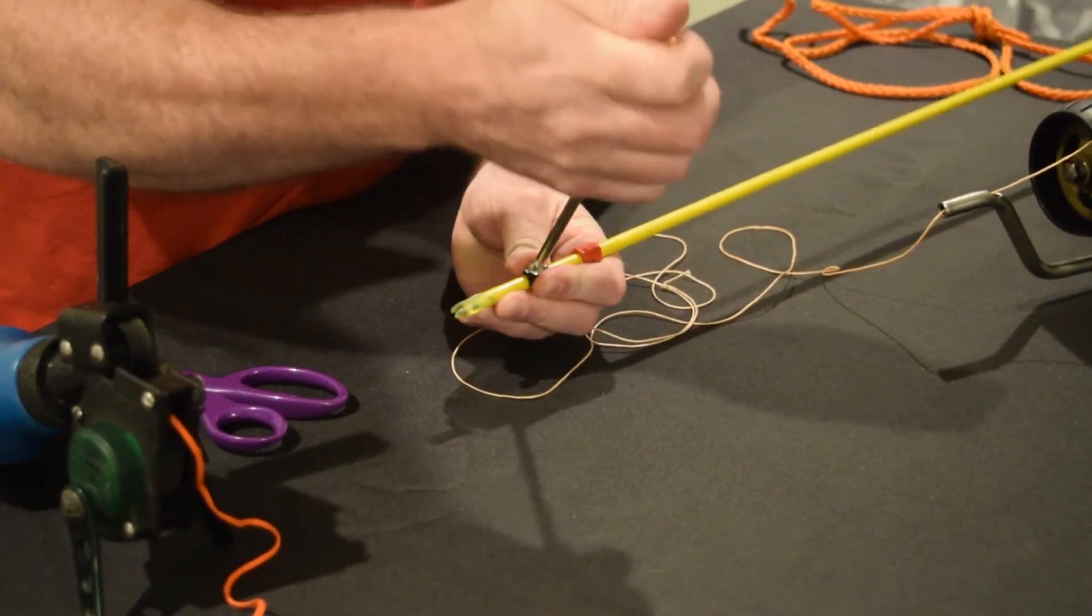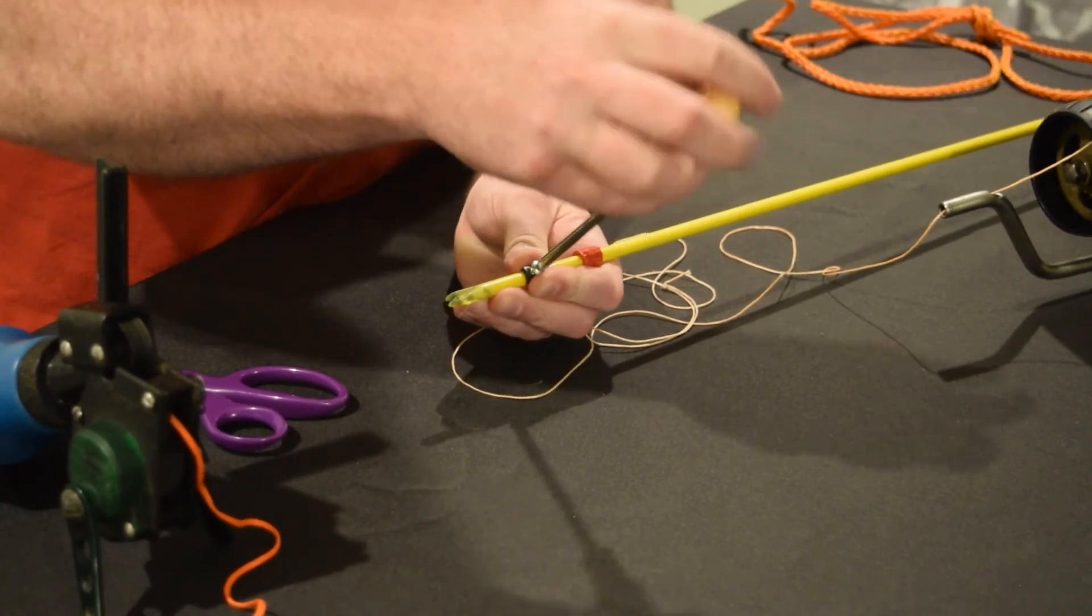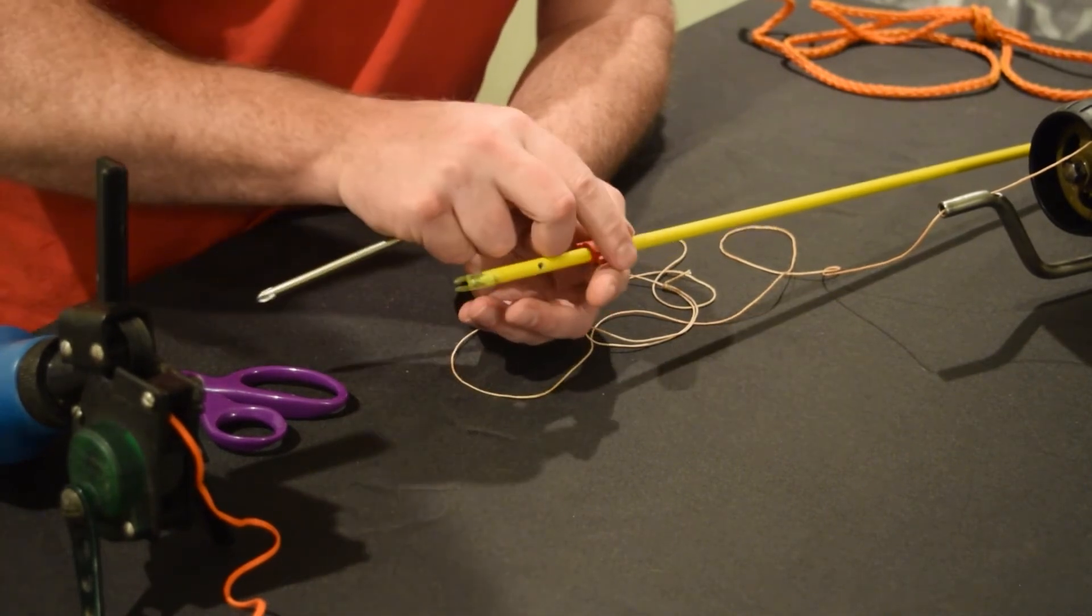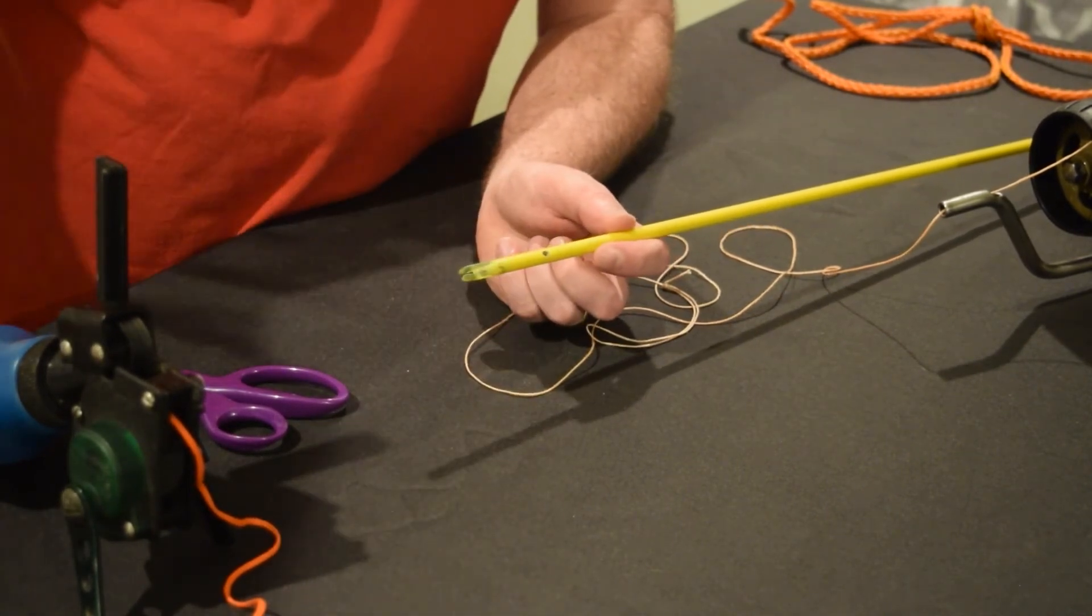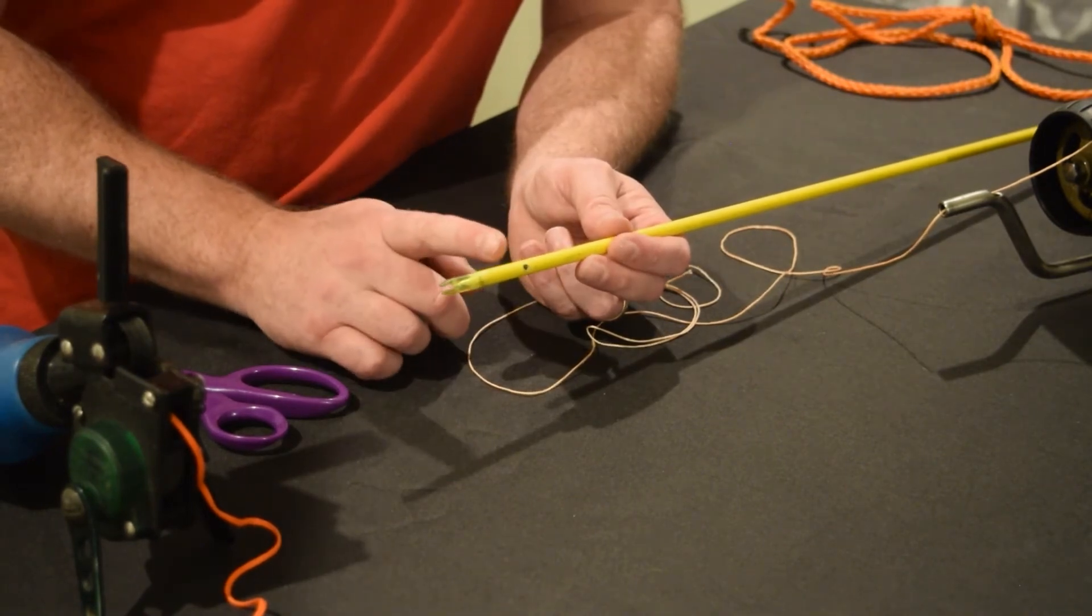Loosen the bolt that holds the cushion on, and then remove the cushion and set it aside. Then slide the safety slide off of the arrow. Now you have an open hole that will allow you to tie to the back of the arrow.